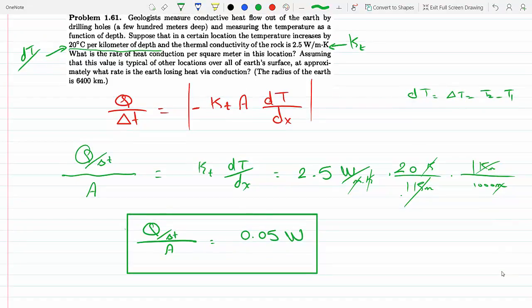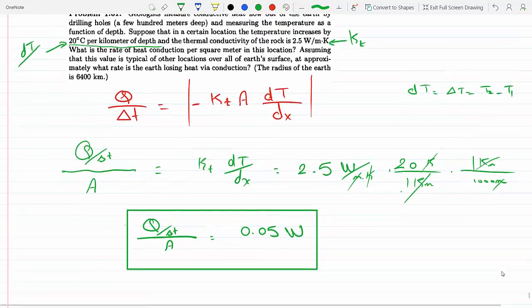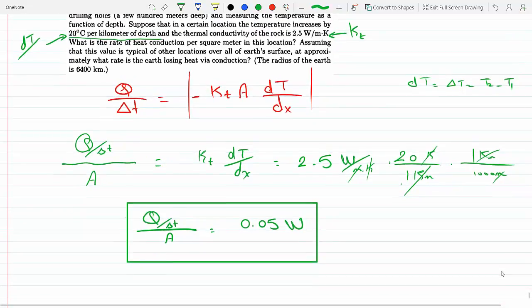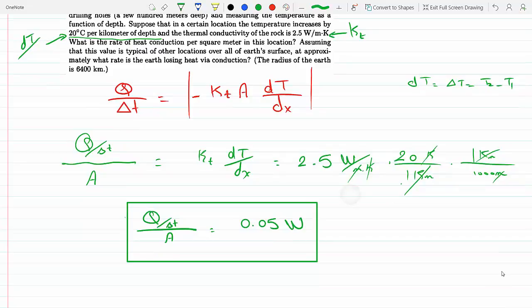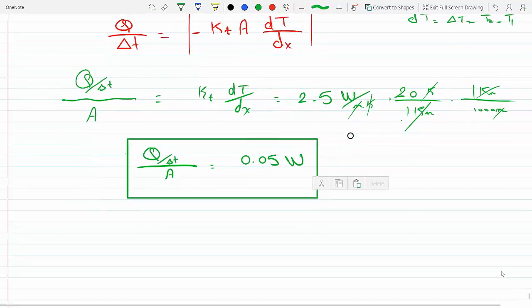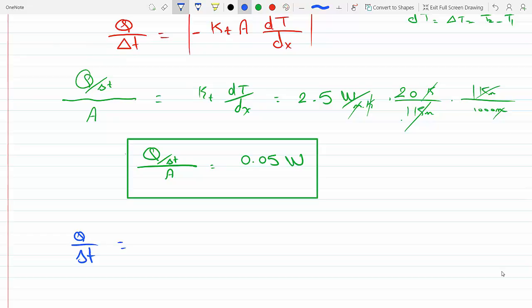Okay, and now this doesn't seem much, but then if this is going on in one square meter of area, and if we assume that the earth is, assuming that this value is typical in every location on the earth's surface, well we have that's for an area of one meter square. If we generalize this to the area of the entire earth and assuming that the earth is spherical, so the area of the earth would be the area of the sphere.